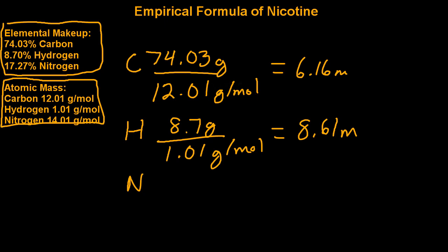And for nitrogen, we'll take 17.27 grams divided by 14.01 grams per mole. That's the atomic weight of nitrogen. All those atomic weights you can find on a periodic table.